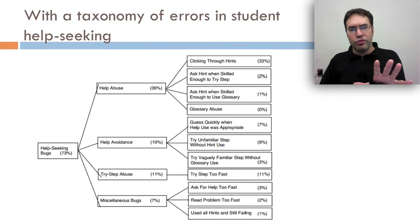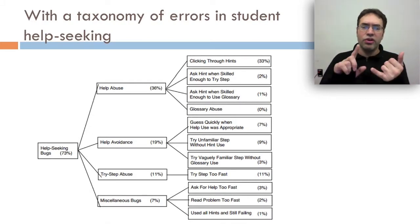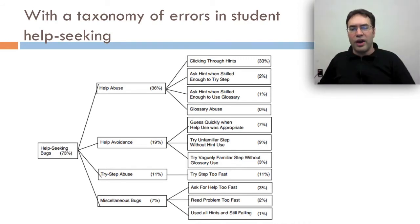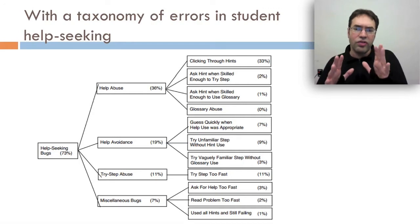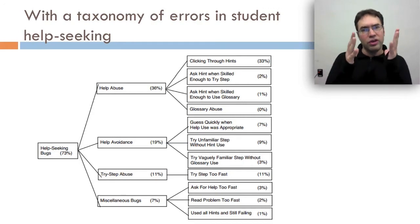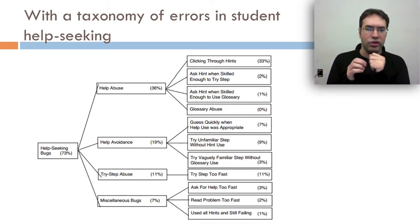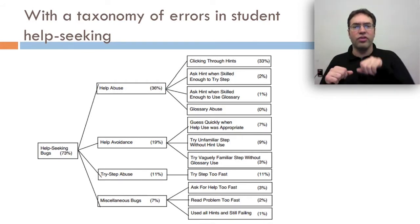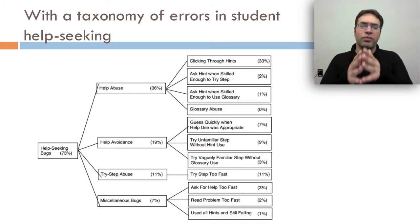Aleven combined this prescriptive model with a taxonomy of student errors in their help seeking, which included things like help abuse and there were subcategories of it, things like clicking through hints, which is a subcategory of gaming system. Also things like help avoidance, so a student needs help but they don't seek it. Try step abuse, which included trying a step too fast, which is a subcategory of gaming system again. Through very thorough study and theorization of this learning system, Aleven was able to come up with this model of how good help seeking occurs and how bad help seeking occurs.